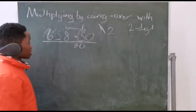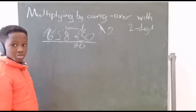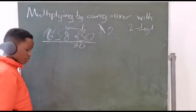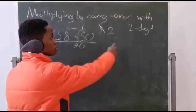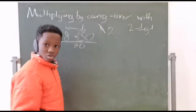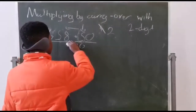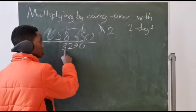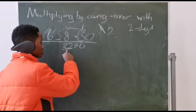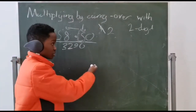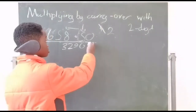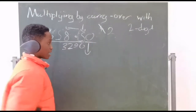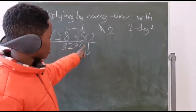I cross the 4 and the 2 comes here. 5 times 6 is equal to 30, plus 2 is equal to 32. The answer is 3290 — so 3, 2, 9, 0. And this zero I put here down.